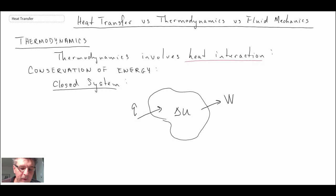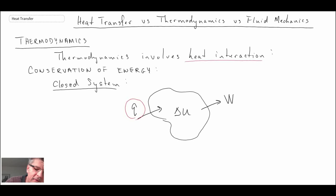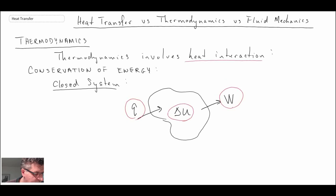When dealing with closed systems in thermodynamics, we show the interaction between the system and the surroundings. Interactions can be in the form of heat transfer Q — and I'm using heat transfer's designation for Q, so if this looks a little strange from a thermodynamics course, that's the reason. We have heat interaction, work interaction, and a change in state — in this case the internal energy of our fixed mass system.